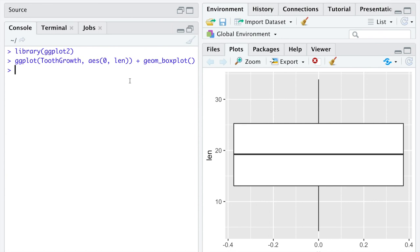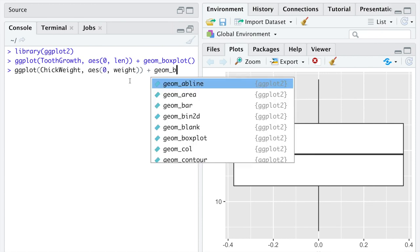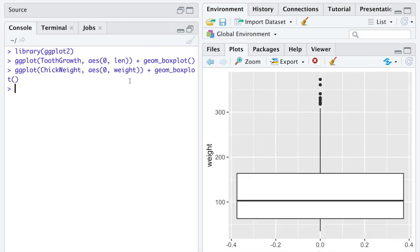Let's do one more example. I'm going to call ggplot on the data frame chick weight. I'm going to specify the aesthetic where we put on the x-axis the number zero. So we're going to center our box plot at the number zero. I'm going to use the variable weight on the y-axis, and I'm going to, once again, make a box plot.